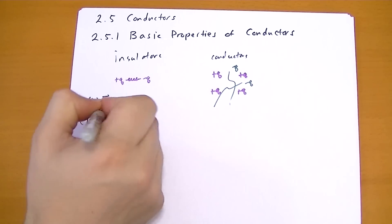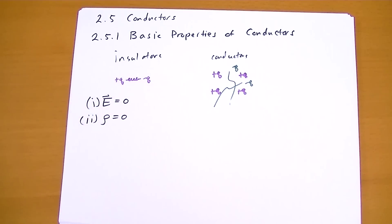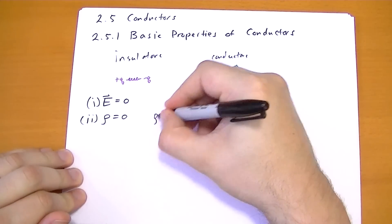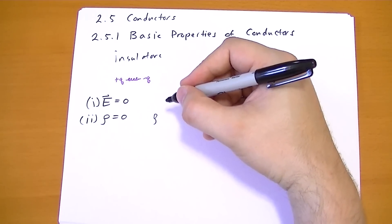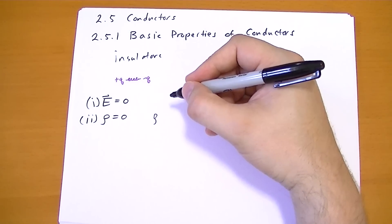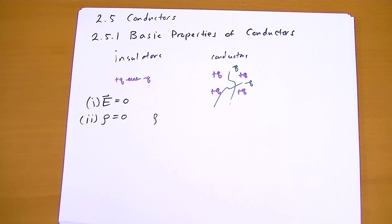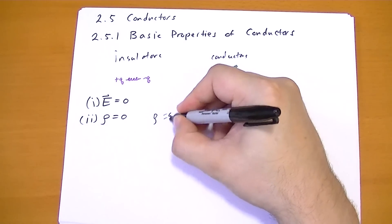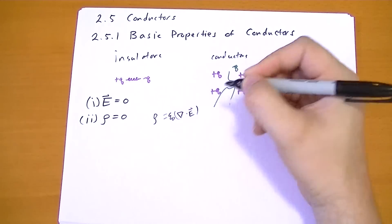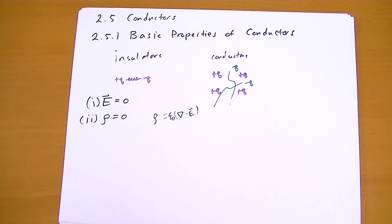Number two kind of follows from the first one. So the charge density inside the conductor is zero. Why is that? The charge density is equal to epsilon naught times the divergence of the electric field. Since the electric field is zero, the charge density is zero. And you can kind of see why that's true. If you had a charge inside producing an electric field, the electric field would have to cancel it out. It would move as well.